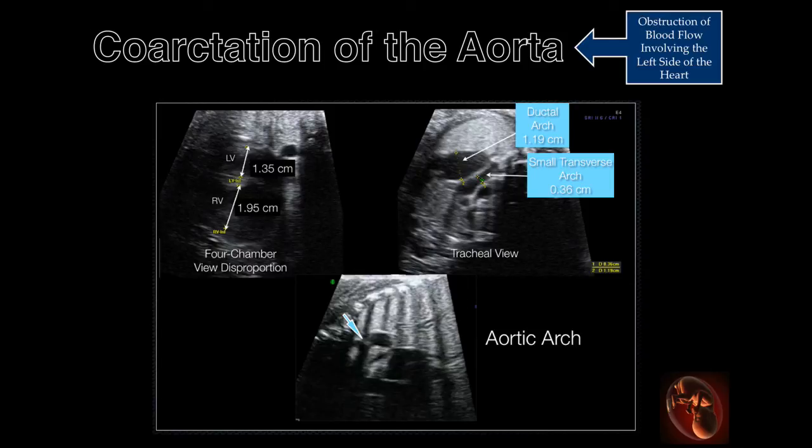The transverse aortic arch is decreased in size, measuring 0.36 centimeters. The aortic arch view demonstrates the area of the coarctation.